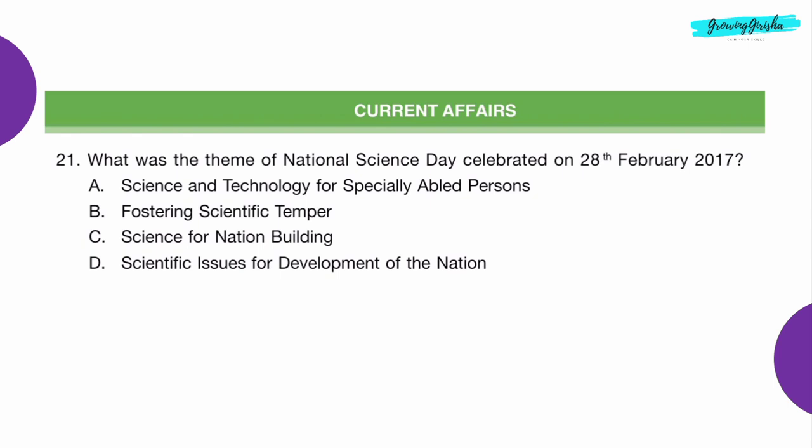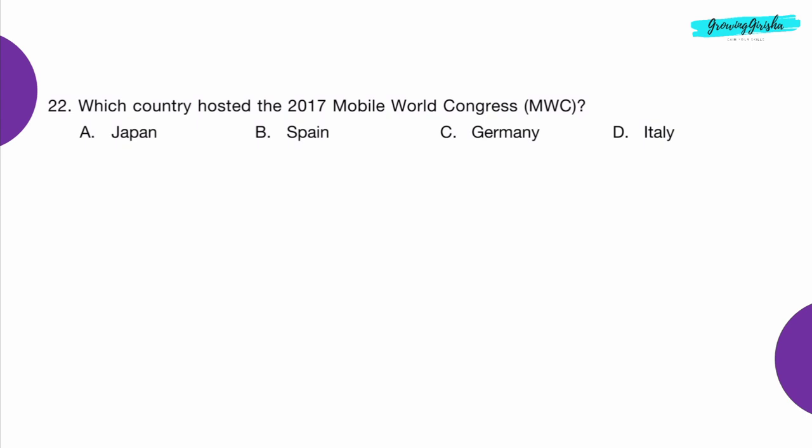Current Affairs. Question 21: What was the theme of National Science Day celebrated on 28th February 2017? Option A: Science and Technology for Specially Abled Persons.